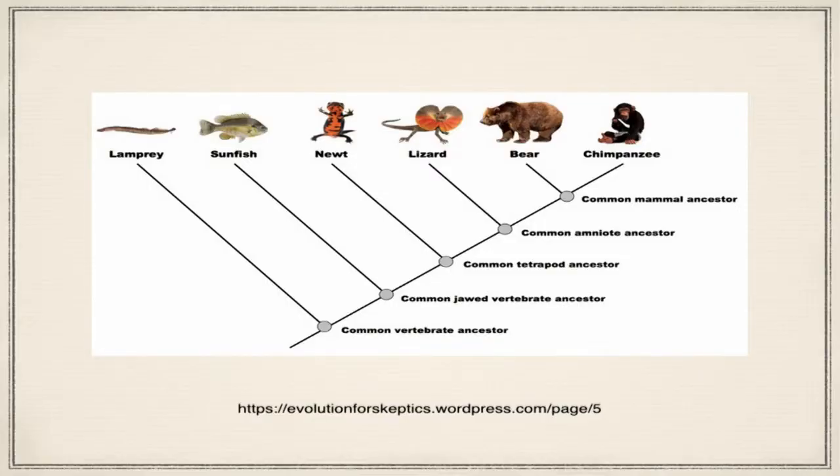For example, we have the well-known tree of life. Starting from the bottom on this slide, there was a common vertebrate ancestor — vertebrate means has a backbone. It split into lampreys, and another line continued: fish split off, then amphibians, lizards, mammals, and then chimpanzees and humans. So it's a branching procession, and this is what the fossils show us — which is what you would expect from evolution.